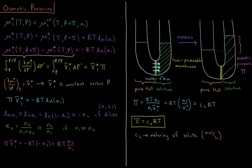Naturally, if we just remove the barrier, the solution would dissolve into the water and they would equalize the concentration of the solute. The water would be at an equal level. But instead, what we have is what is called a semi-permeable membrane. This membrane allows water to flow through, but it doesn't allow the solute to flow through.